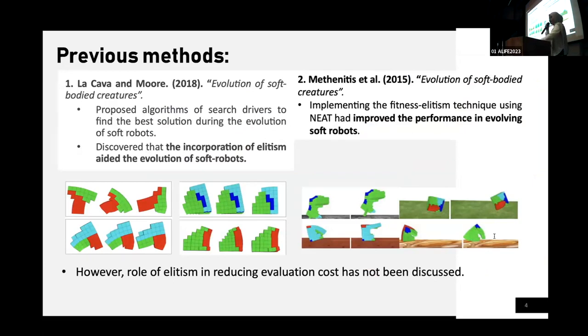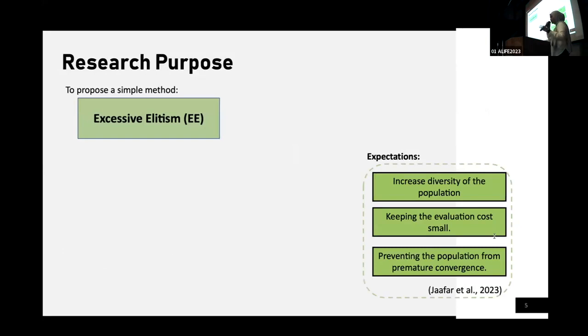However, the role of elitism in reducing the evaluation costs has not been exclusively discussed. So in this study, we propose a simple method that we call excessive elitism, or EE method, to increase the size of the population by keeping the evaluation costs small. Why we increase the size of population? Because we want to contribute to prevent the population from premature convergence by having a higher diversity.